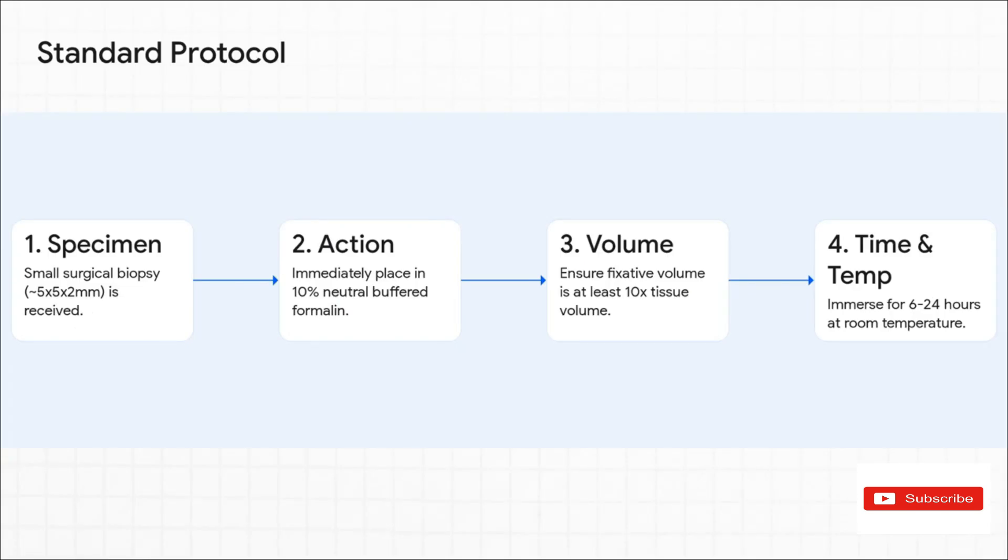Let's see how this all comes together in the real world. Imagine a small skin biopsy arrives in the lab. The protocol is immediate. Place it into a container of 10% neutral buffered formalin. You visually check to make sure that the container has at least 10 times the volume of fixative as the tissue. Then, it's sealed up and left for anywhere from 6 to 24 hours at room temperature. This one simple routine process perfectly brings together all the principles of fixative choice, volume, time, and temperature we've just been talking about.